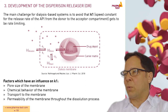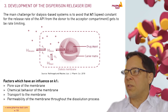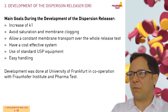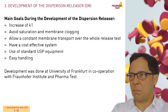We need to look at the parameters which have an influence on K1. These are the pore size of the membrane and the chemical behaviors of the membrane. Typically, materials such as regenerated cellulose and cellulose ester are used. We also need to look at the transport to the membrane and the permeability throughout the dissolution process. The main goal during the development of the dispersion releaser has therefore been how to increase K1, how to allow constant membrane transport over the whole release test. Also important is to have a cost-effective system which uses standard USP equipment, and the handling should be easy.